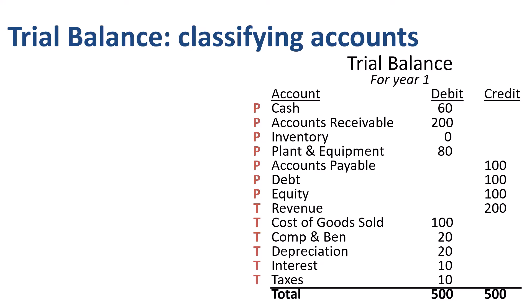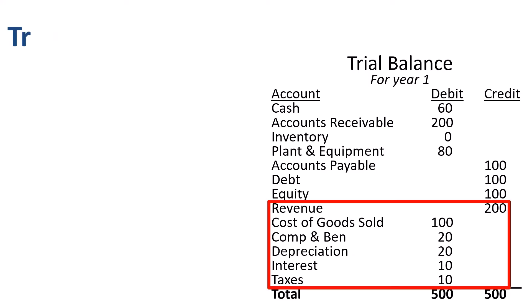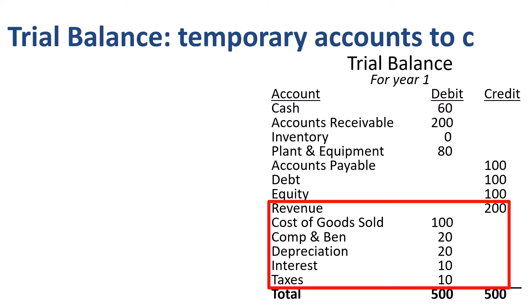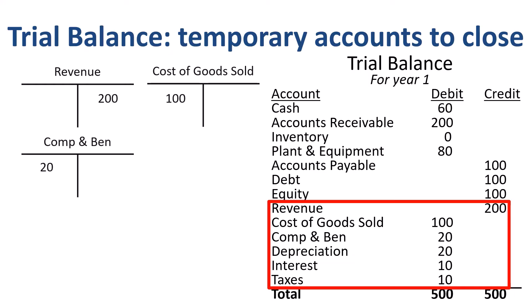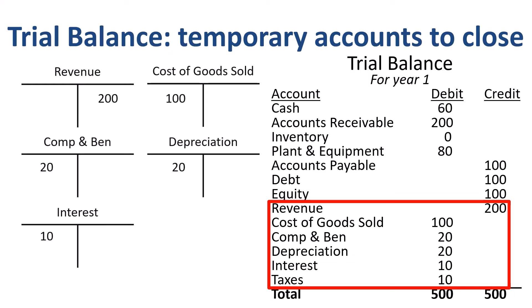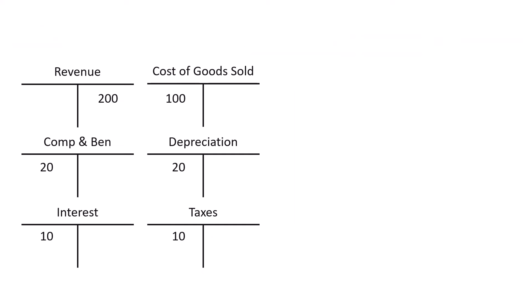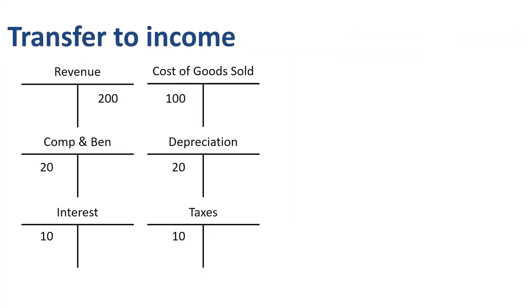The temporary accounts are the ones that we need to close. Let's declare our closing entries using T-accounts — visual representations of accounts for optimal understanding of the accounting flows. Here are the six temporary accounts and balances that we need to close: revenue, cost of goods sold, compensation and benefits, depreciation, interest expense, and provision for income taxes. Revenue has a credit balance; the other five expense accounts have a debit balance. In order to close the temporary accounts for this accounting year, we are going to transfer the balances to the income summary account. Let me show you.